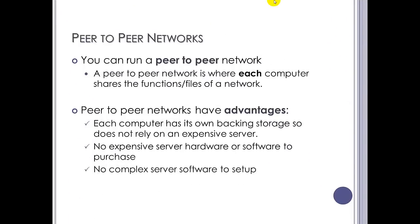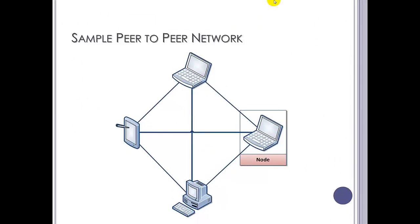A peer-to-peer network is when you don't have a central server — just a large collection of machines connected together. Peer-to-peer networks do have their own advantages: there's no expensive server hardware and no difficult server software to set up, so cost-wise it can be cheaper. In a peer-to-peer network all the machines are connected together with no central server controlling anything. It can be difficult to control security, but you don't need the expense or technical know-how of setting up a dedicated server.